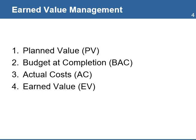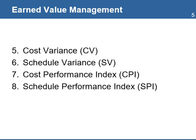Earned Value is the percentage of work completed multiplied by the total planned value, or BAC, at a specific time. Cost Variance is the value obtained by deducting the project's actual cost from the earned value. It shows the variance between what has been completed and the costs that have been incurred.